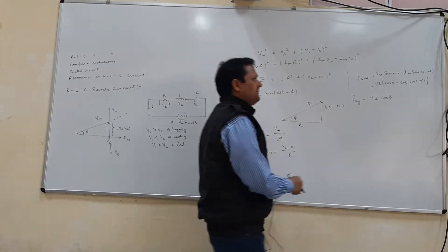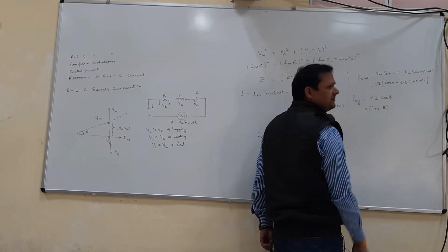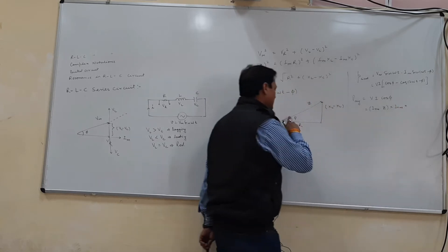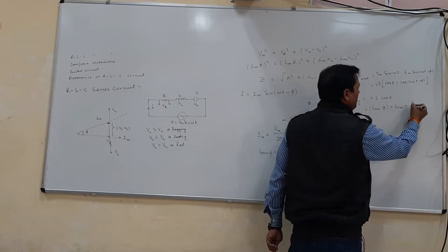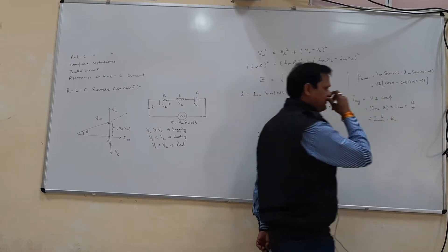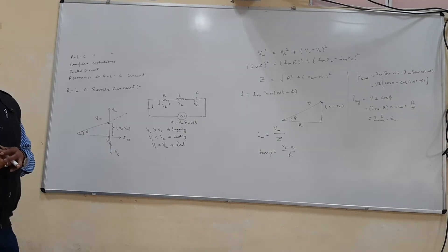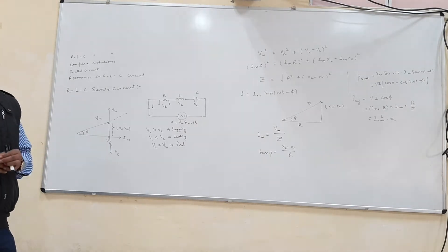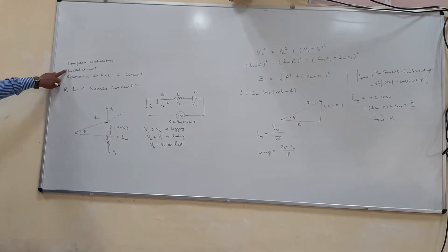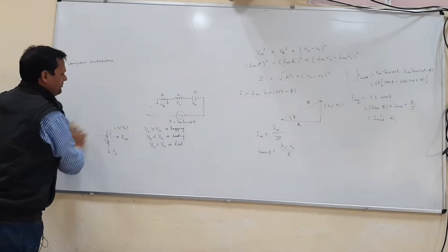We can further write V·I·cos phi as Irms times Z times Irms times (R/Z), so Z cancels and the average power simplifies to Irms squared times R. This result holds universally. We will cover complex notation next, and then begin numericals.